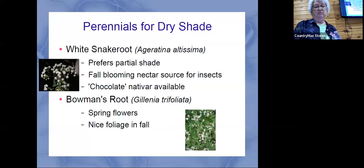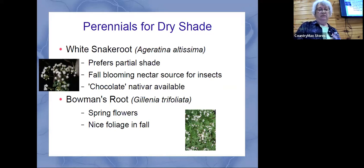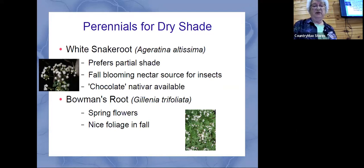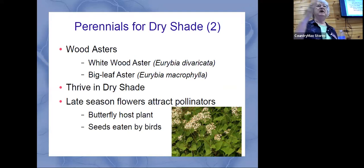Snakewort is just kind of an interesting plant with an interesting flower that blooms in shade. Bowman's root blooms in spring and has nice foliage in the fall with a kind of delicate flower. There's lots to choose from — you just think of the old standbys, but you can really go beyond that.